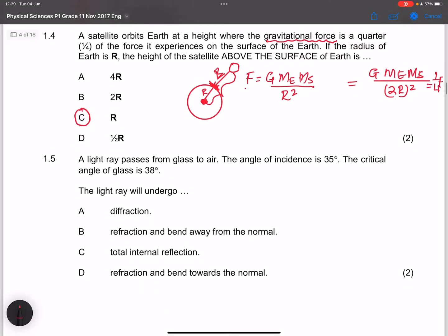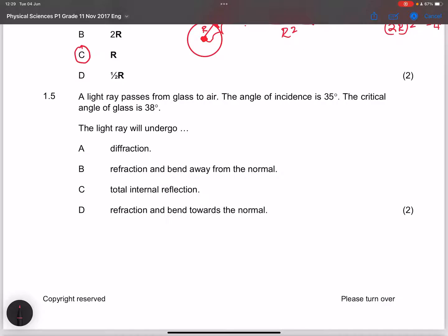So our answer will be C. Let's go to the next question. They say a light ray passes from glass to air. The angle of incidence is 35 degrees. They say the critical angle of glass is 38 degrees. Note what will happen to the light ray. We're going to be using Snell's law here. We have light that is incident. At the end of the day, we know that it will refract and it will bend away from the normal. So in this case, we're going to have B as our answer right there.